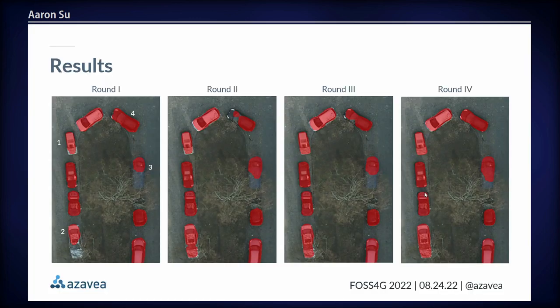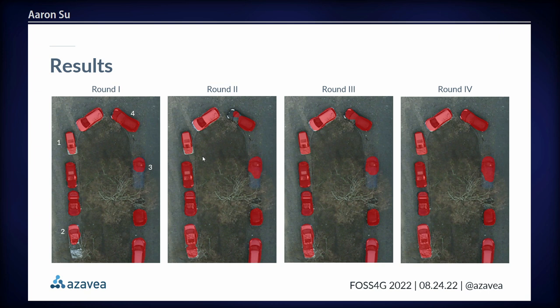Let's see some quick results. As you can see, the predictions improved round by round. For example card number one: the model started with some very initial predictions and then gradually developed fuller annotations after some human validations in later rounds. For cards number two and three — cars under tree branches — the model predicted better in later rounds with some human involvement. The predictions also tend to converge to a more stable version in terms of shape in later rounds, which can be seen across all of these labels and especially in label number four. This shows that with some proper human intervention between just a few machine learning iterations and very little training data, the resulting training dataset already has pretty good quality.